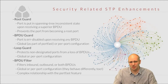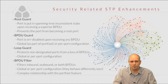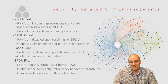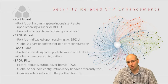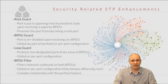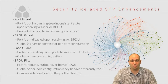Loop guard is a feature designed to protect non-designated ports — specifically the blocking ports, not root ports — from a sudden loss of BPDUs. If a port in a blocking state stops receiving BPDUs, it will eventually move into forwarding state. If those BPDUs are being dropped due to misconfiguration on the other switch, this could result in a bridging loop, which is dangerous. Loop guard prevents this by putting the port into a loop inconsistent state when BPDUs stop arriving. When BPDUs resume, the port will move back out of the inconsistent state.